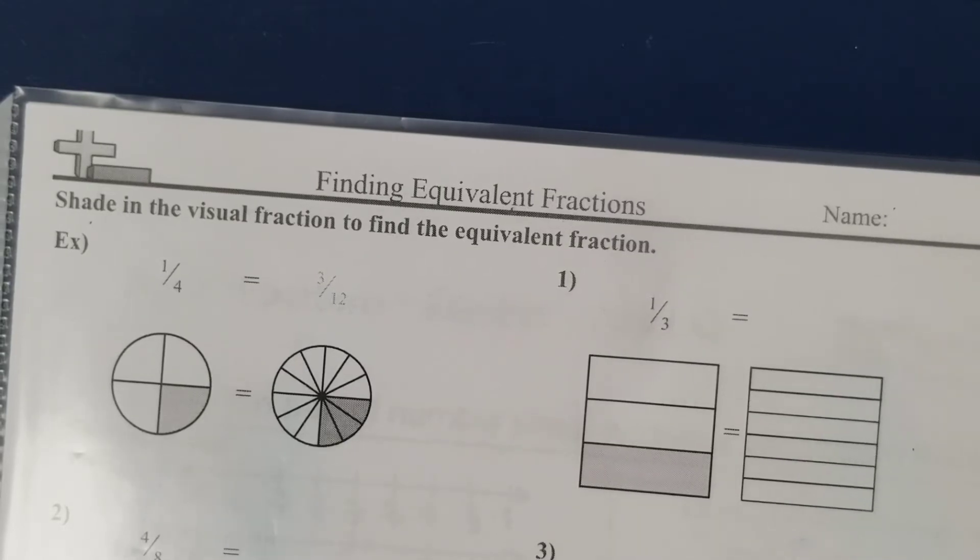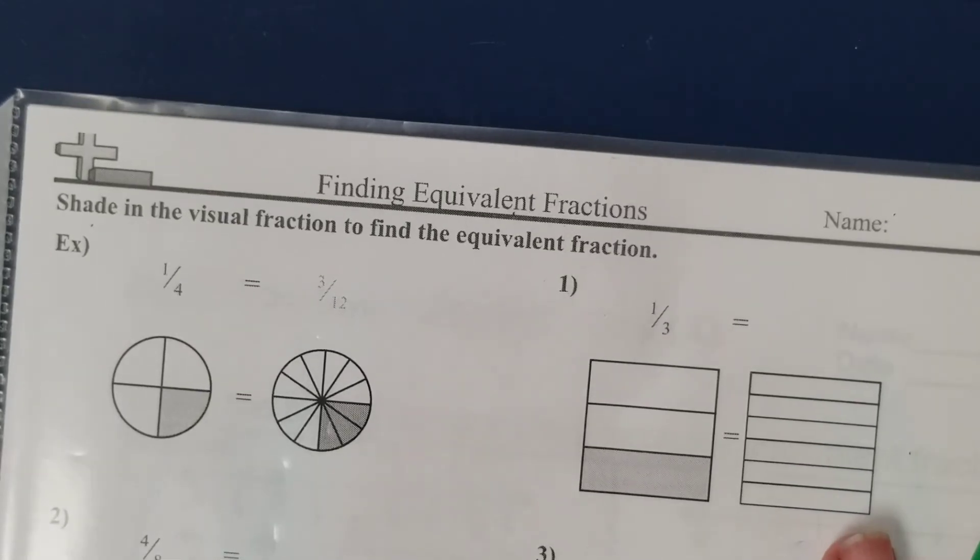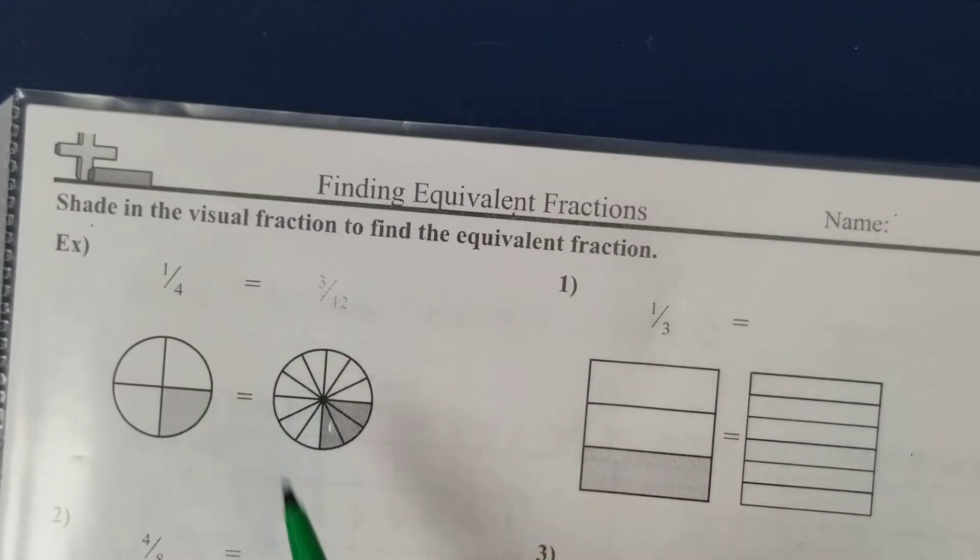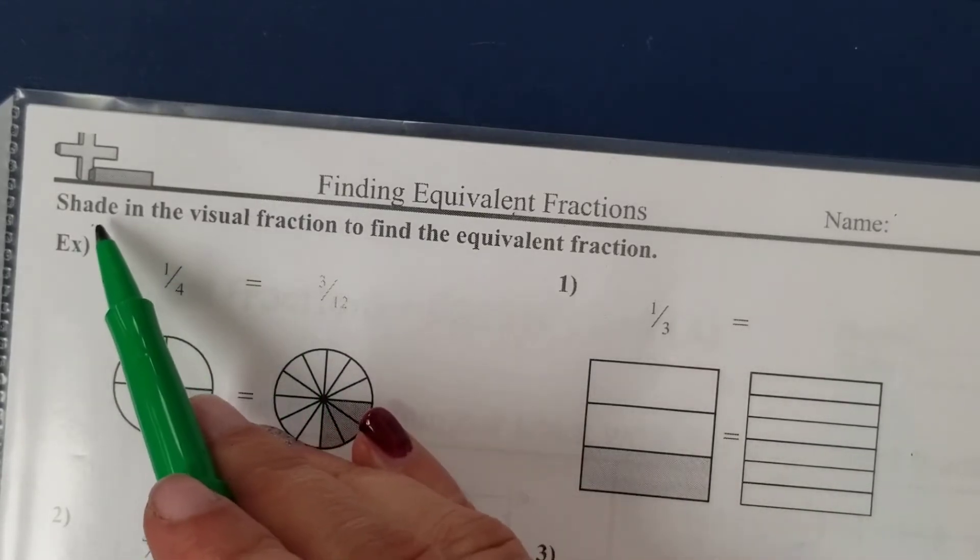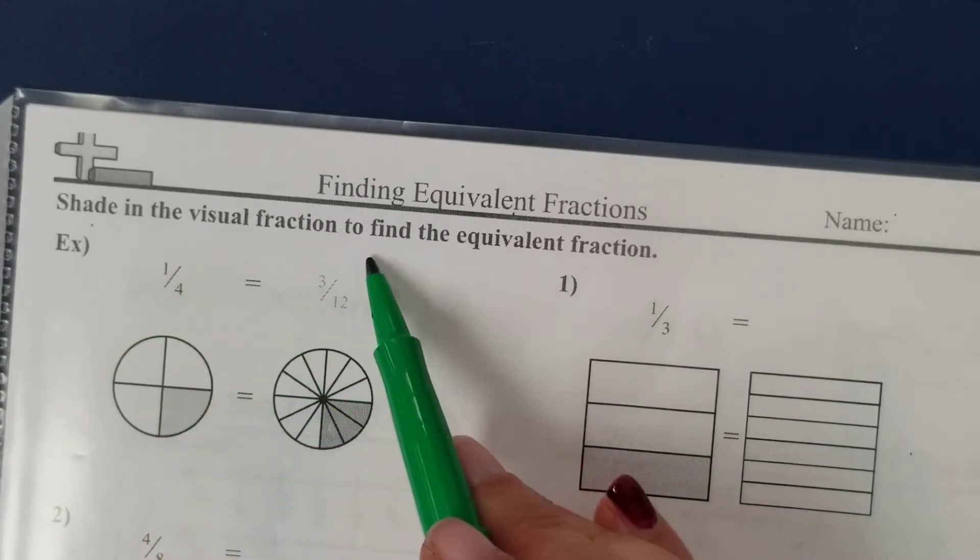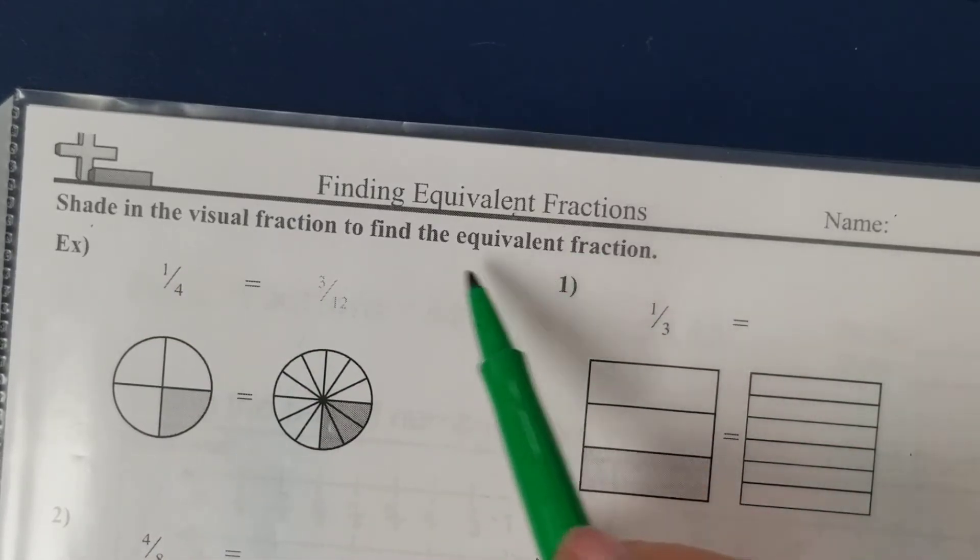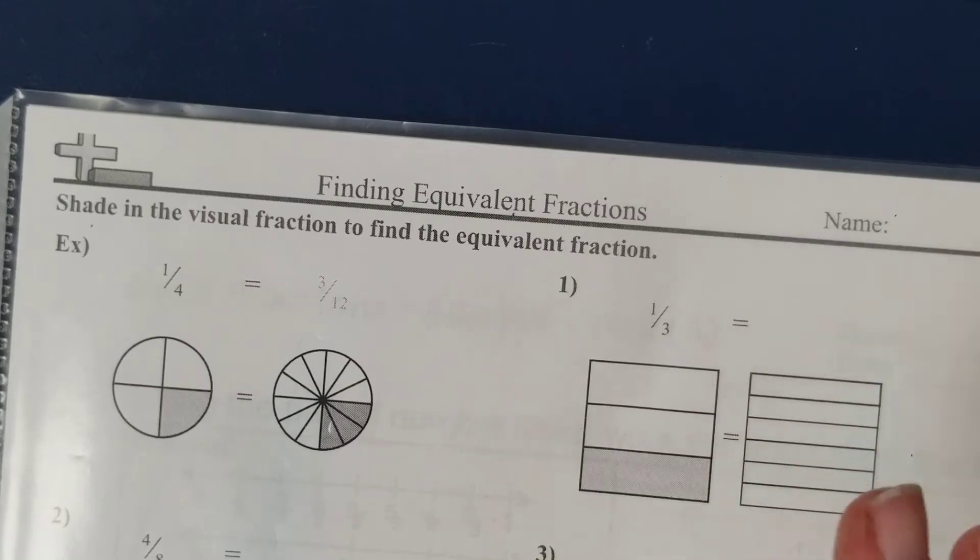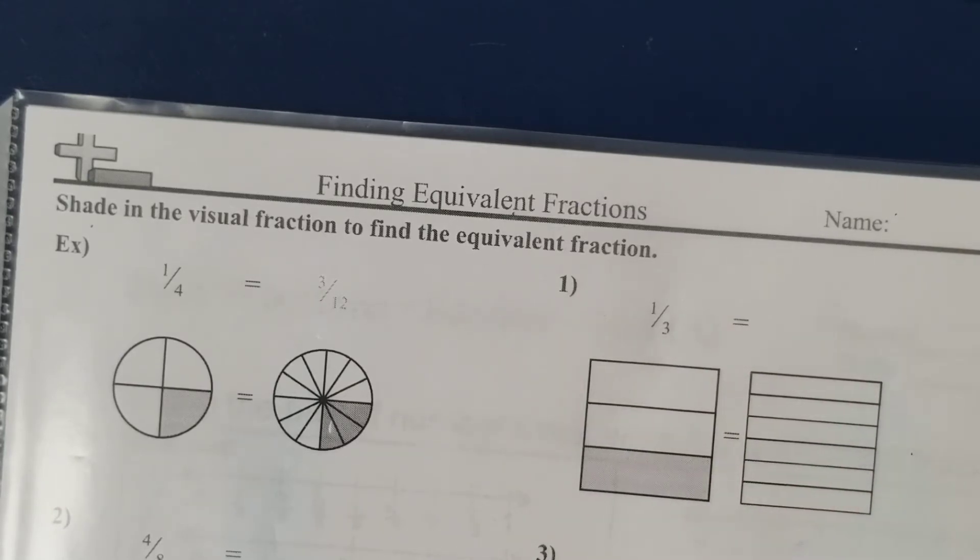In tonight's example we're looking at using geometric shapes to identify fractions. The directions ask us to shade in the visual fraction to find the equivalent fraction. Remember, equivalent has the word equal in it, so it means finding two fractions that are equal to one another.